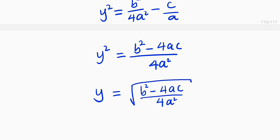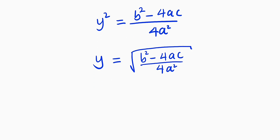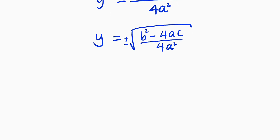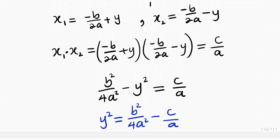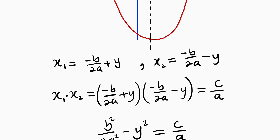The square root of 4a squared is just 2a, so we can simplify. Remember the plus or minus. Finally, the value of y we are looking for is equal to plus or minus the square root of b squared minus 4ac divided by 2a. Since we have obtained y, we can go ahead and plug it back into the two equations.